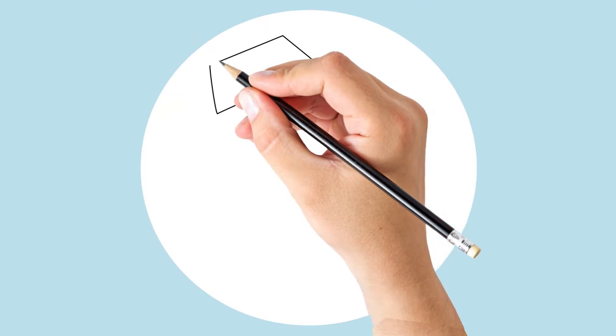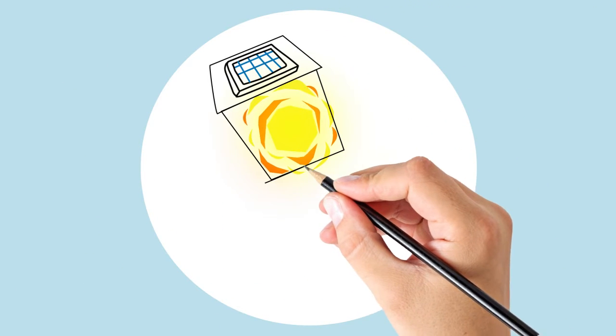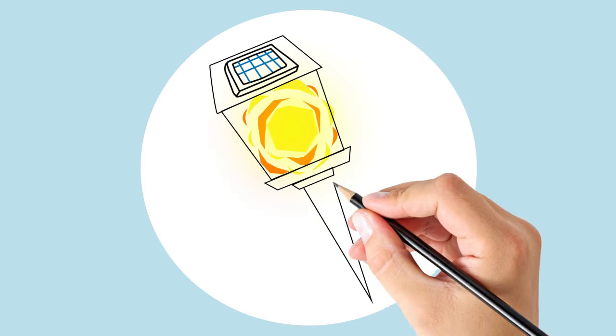Outside the home, you can use solar lamps to light up your garden. And there is no need to connect them to the electricity grid. Just plant the lamps in the ground.